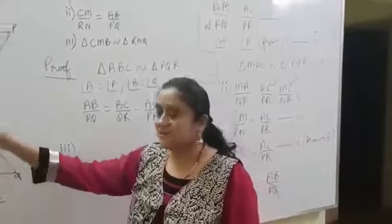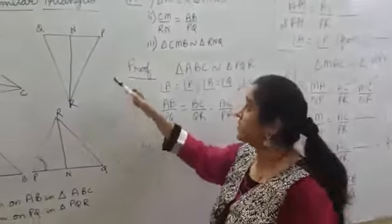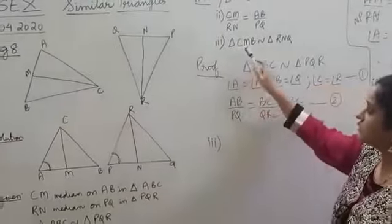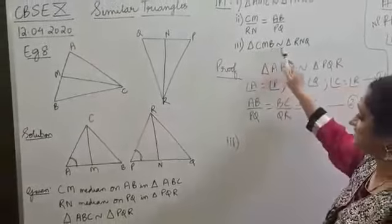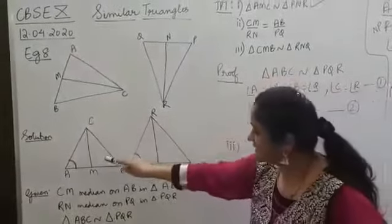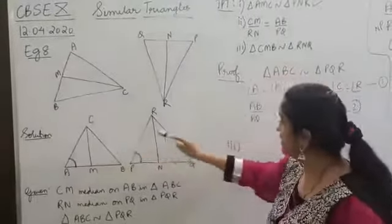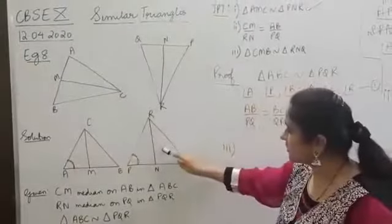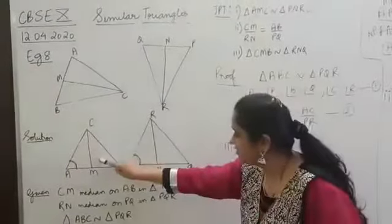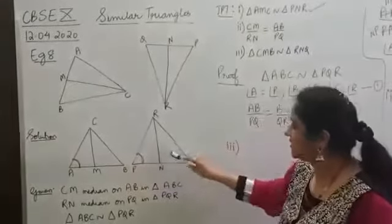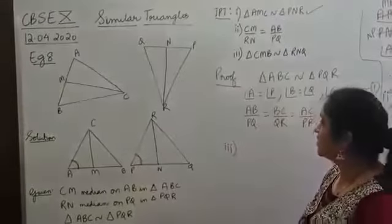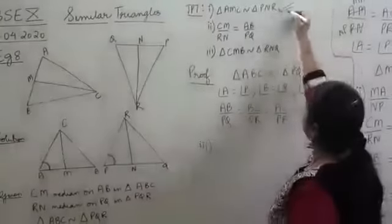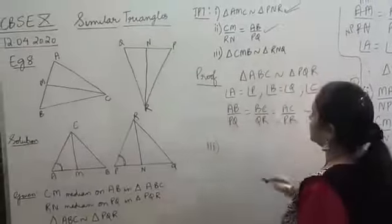In example 8, let's prove the third subdivision. We need to show that triangle CMB is similar to triangle RMQ. CMB is similar to RMQ. Now we have already proved results 1 and 2.